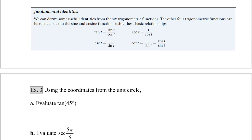So now we're going to review some fundamental identities. First, we'll review the reciprocal identities: secant equals 1 over cosine, cosecant equals 1 over sine, and cotangent equals 1 over tangent. We also learned the quotient identity — tangent equals sine over cosine. And since cotangent is the reciprocal of tangent, cotangent equals cosine over sine.